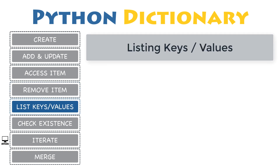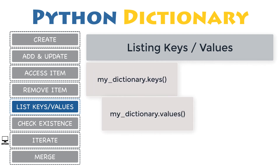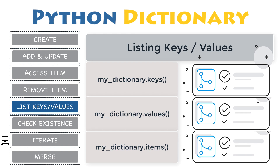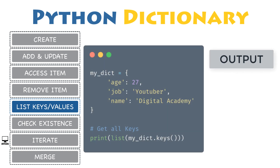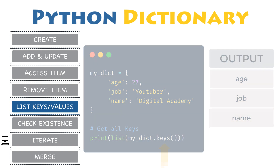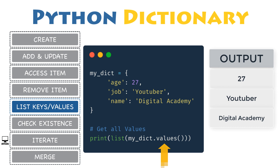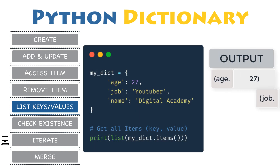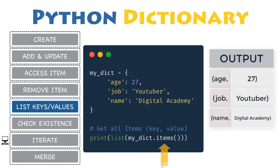There are three dictionary methods that return all of the dictionary's keys, values, and key-value pairs. These methods are useful in loops that need to step through dictionary entries one by one, since all three return iterable objects. The keys() method returns an iterable object containing all the keys. The values() method returns only a list of all the values. The items() method returns a list of tuples, where each item is composed of the key and its associated value.